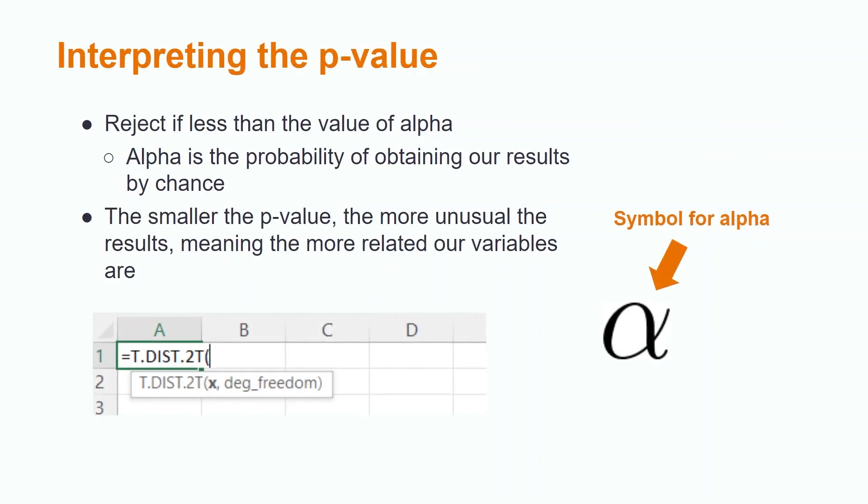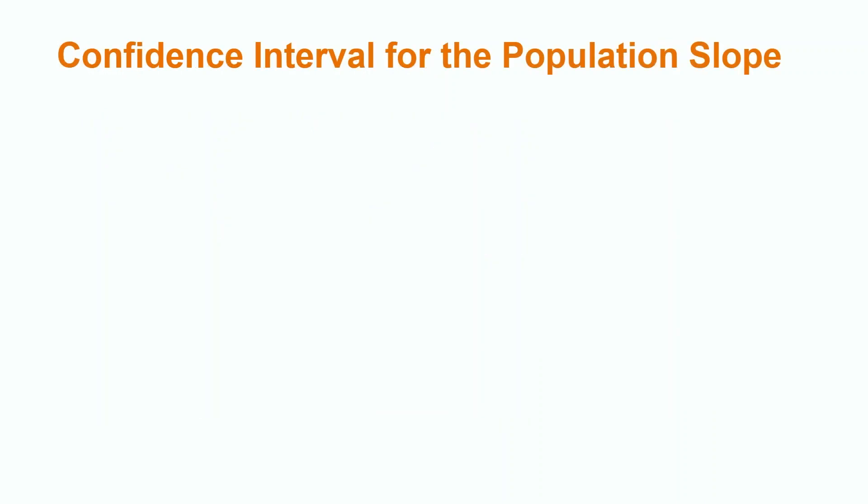Once we know the value of our test statistic, we can use the p-value to determine whether or not to reject the null hypothesis. Calculating the p-value for a test statistic is outside the scope of this lesson, so it will be provided to us. If the p-value is less than alpha, the probability of obtaining our results due to chance, then we reject the null hypothesis. The value of alpha is always assumed to be 0.05 unless specified otherwise. The smaller the p-value, the more unusual our results are, meaning the more related our variables are. For example, if we had a p-value of 0.0034, we would reject the null hypothesis. However, if we had a p-value of 0.26, we would fail to reject the null hypothesis.